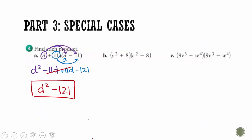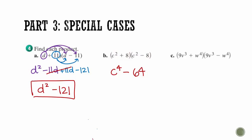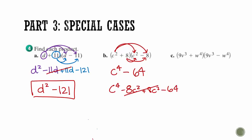Using the rule on (c² + 8)(c² − 8): take the first term and square it to get c to the fourth, and take the second term and square it to get 64, with a negative sign in between. This rule I do memorize because it's less work than fully distributing. You can either use the rule or double distribute — just make sure your middle terms cross off.